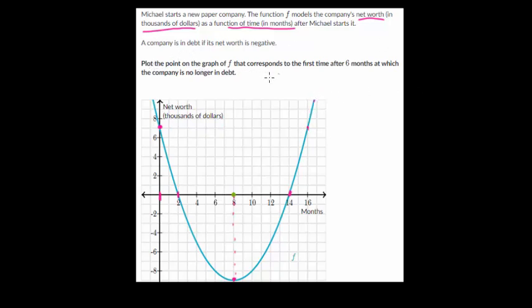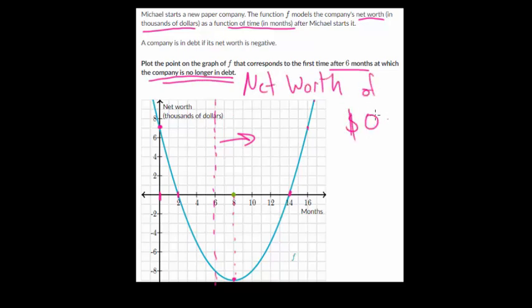We need to plot the point on the graph that corresponds to the first time after six months at which the company is no longer in debt. We're looking after six months, so I'm going to draw in this barrier. We're looking to the right of that because we're looking after six months. We want to know when is the first time that the company is no longer in debt, so that's the net worth of $0 or greater. That would be right here. 14 months in, that's where he breaks even again, and then everything after 14 months is profit. This green point, you'd have to drag to this point right here.